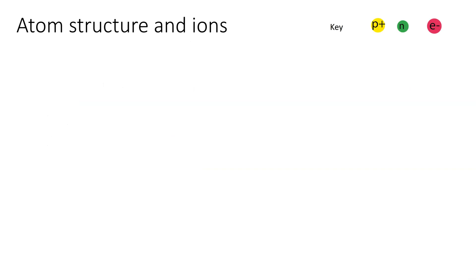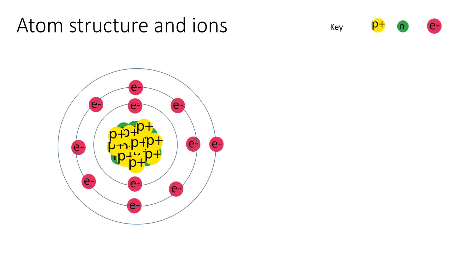We're going to talk about atomic structure and ions. Our key says the yellow are going to be protons, the red are going to be electrons, the green will be neutrons. I have not drawn this to size or scale. I just want you to understand the concept. This is sodium, the sodium atom.